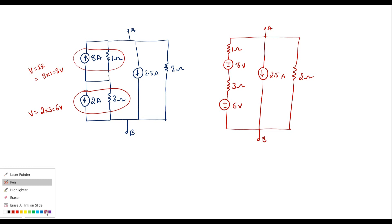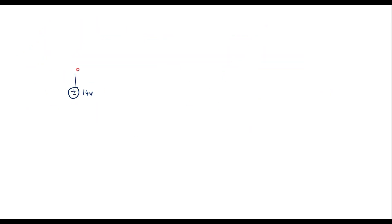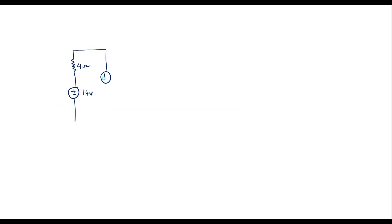Now let me simplify this further. We can see that 3 ohm and 1 ohm are in series and the two voltage sources are in series. I can add these two voltage sources because their polarities are the same — plus minus, plus minus. I can replace these two voltage sources by a single voltage source of magnitude 14 volt. The 3 ohm and 1 ohm in series give 4 ohm. Connect 4 ohm in series with this. In parallel with this, we have 2.5 amp and a 2 ohm resistor. This is terminal A and this is terminal B.